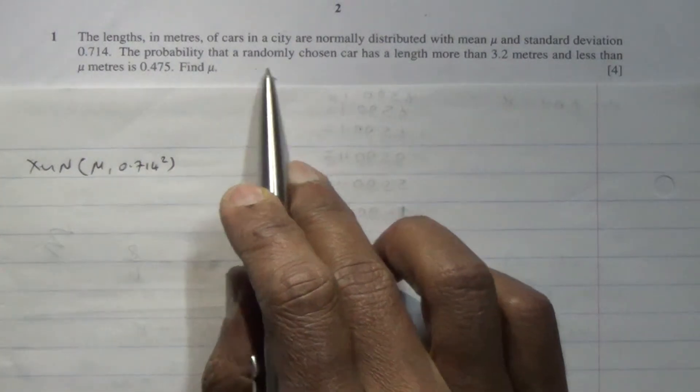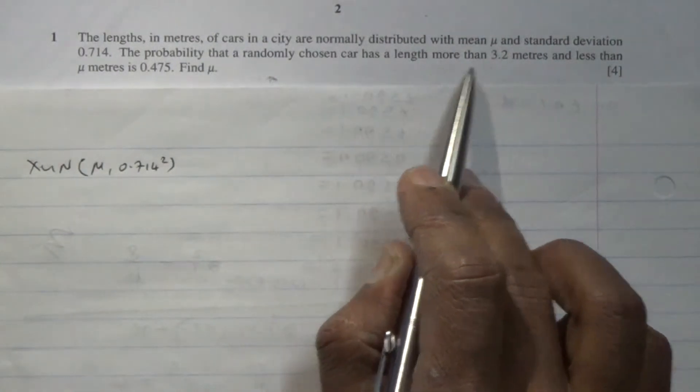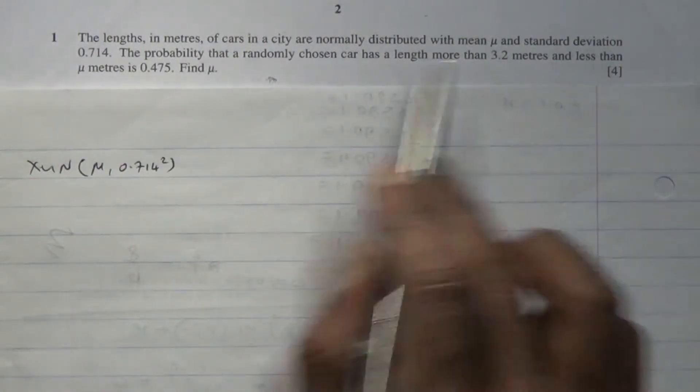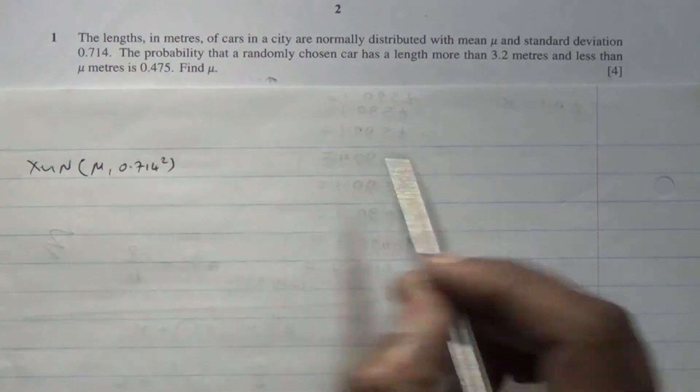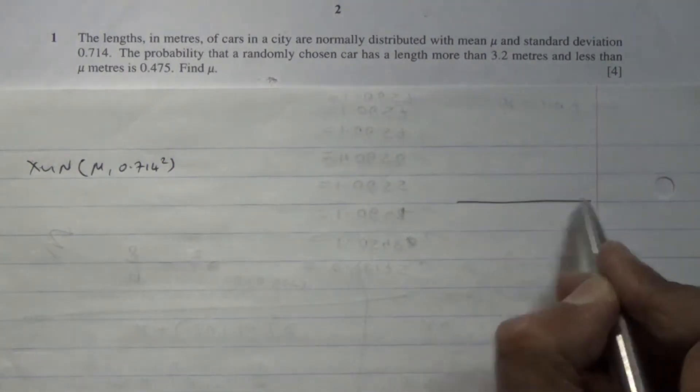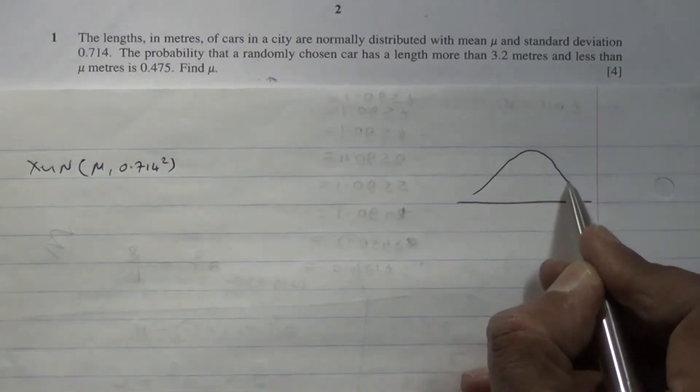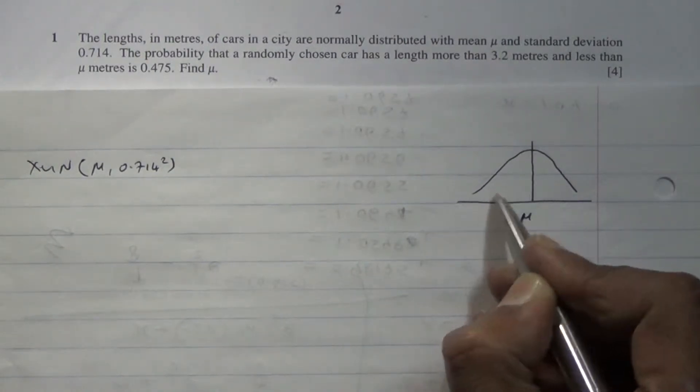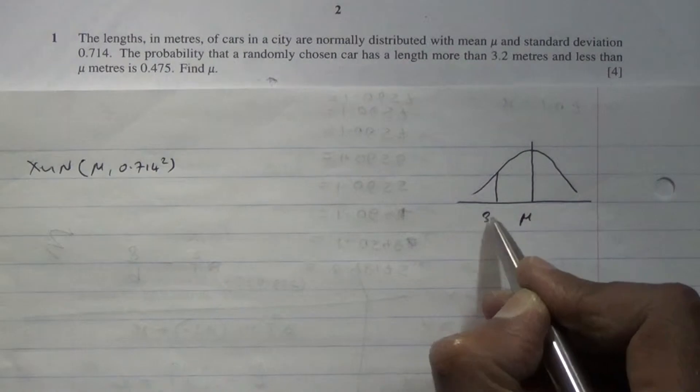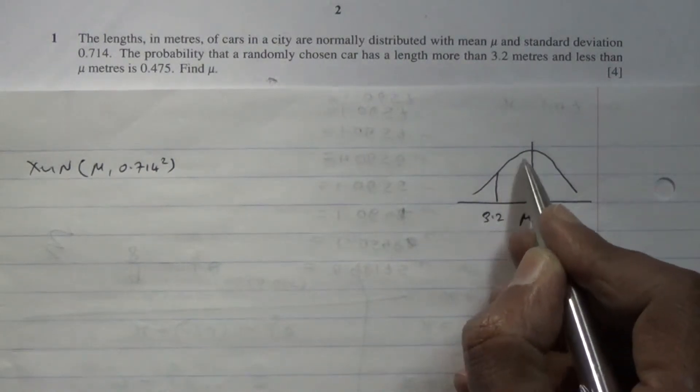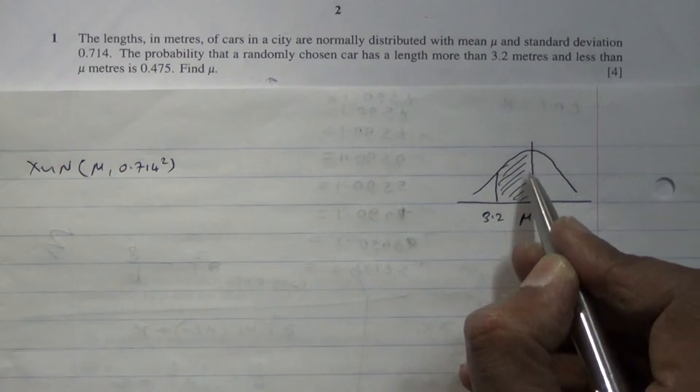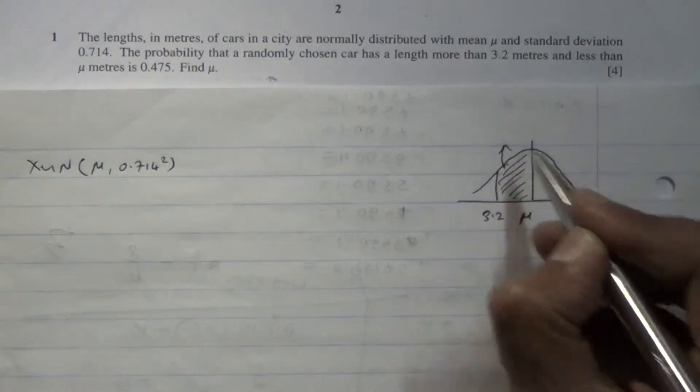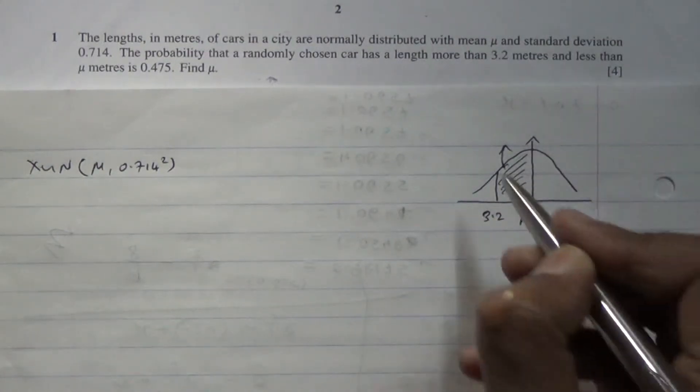The probability that a randomly chosen car has length more than 3.2 meters and less than mu meters. If we look at this on a normal distribution curve, so this is our mean mu. Less than mu is on this side. Greater than 3.2 will be there. So we're looking at an area which is to the left of the normal distribution curve.